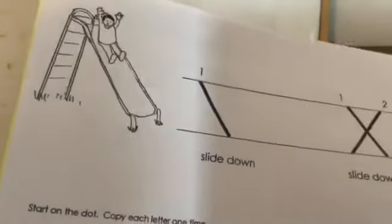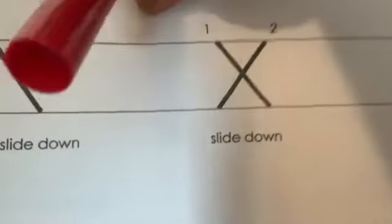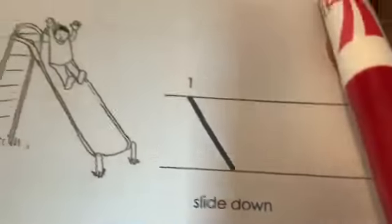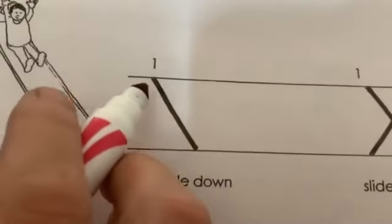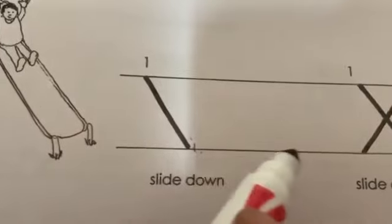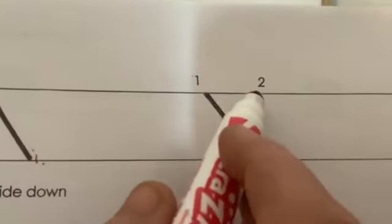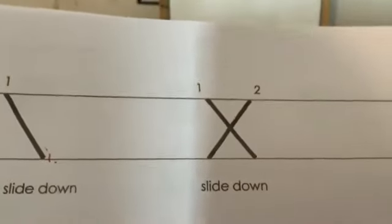The next thing we're going to do is look at letter X. There are only two lines in the letter X. If you see the little boy on the slide, that's what our little one's going to do — he's going to slide down. Then we get back to the top and slide down across. We're going to practice our letter X.